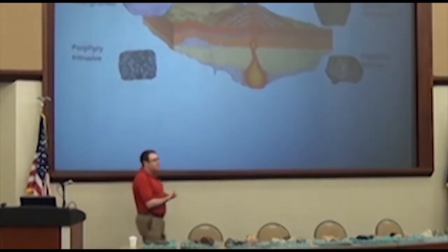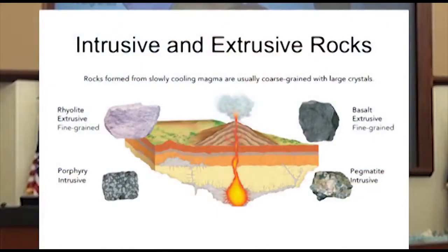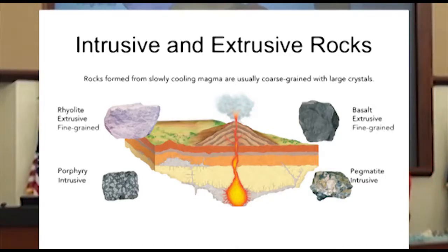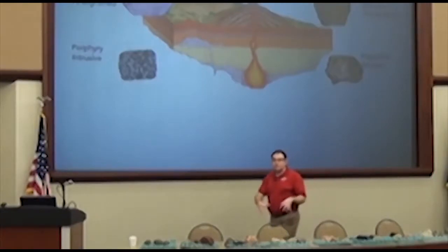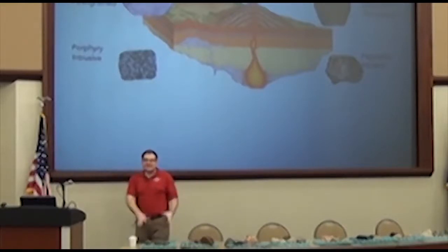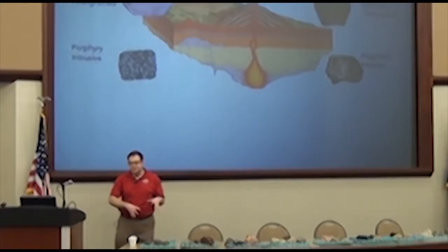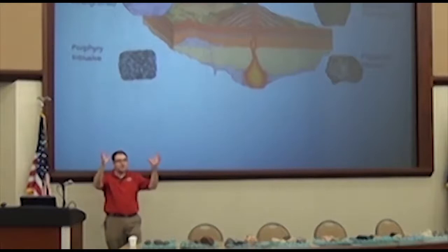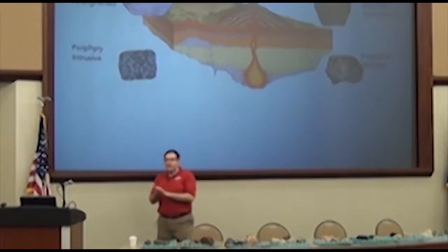There's one way that we separate igneous rocks when we classify them, and this is based on where they were when they cooled from liquid rock into solid rock. Some of the rocks cooled underneath the ground and some cooled above the ground. The ones that cooled inside the ground we call intrusive — it cooled inside the earth. The ones that cooled outside of the earth we call extrusive. They have some feature differences I'll tell you about in just a second.